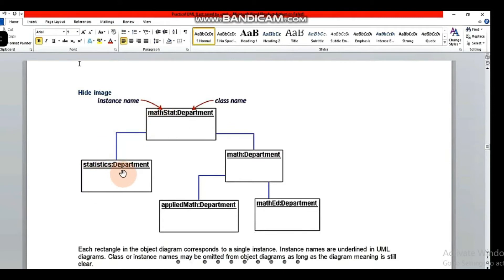In math stat, statistics is the instance name and Department is the class name. The second one is math, and here we have a colon, then the class name Department. It has further branches, multiple instances. We have applied math as the instance name, then colon, then class name. Again, method is the instance name, and after the colon is the class name.